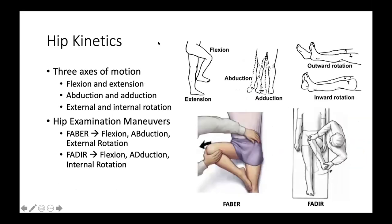The hip moves in three axes: flexion and extension, abduction and adduction, and external and internal rotation. These movements can be combined when examining the hip to elicit different pathologies. Two common combined positions are FABER — flexion, abduction, external rotation — and FADIR — flexion, adduction, and internal rotation.